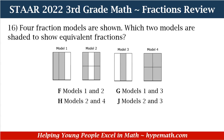Looking at our models: Model 1 has 3 parts, and of those 3 parts, 2 are shaded. Model 2 has 6 parts, and of those, 4 parts are shaded. Model 3 has 3 parts, and of those, 1 area is shaded. And for Model 4, we have 4 parts, and of those 4 parts, all 4 are shaded.